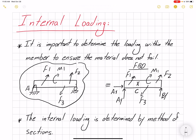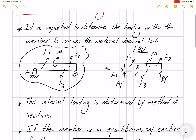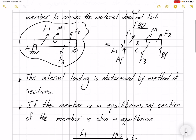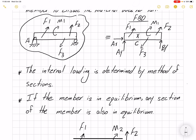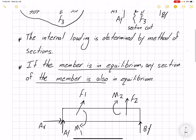Similar to truss problems — if you remember, we cut the truss in half and wrote equilibrium equations for each segment. We could choose the right side or the left side because any segment of the truss would also be in equilibrium. The concept here is the same: if the member is in equilibrium, any section of the member is in equilibrium. So we can make a section cut and find the loading at that location. If the problem asks us to find the load at section C, we make the section cut there to expose the internal loading.